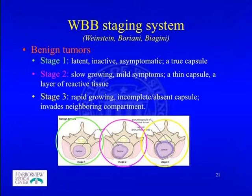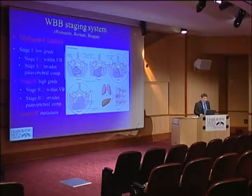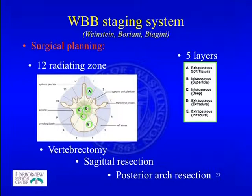For malignant tumors, there are also three stages: Stage 1 is low-grade, Stage 2 is high-grade — each subdivided into A (within the vertebral body) and B (invading the paravertebral compartment) — and Stage 3 is metastatic disease. The Boriani group also developed a surgical planning system dividing the vertebra into 12 radiating zones like a clock face, and from outside to inside into five layers. Based on tumor involvement, several treatment options exist including vertebrectomy, sagittal resection, or posterior arch resection.